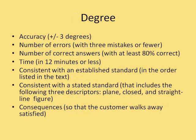The final part of an objective is the degree or criteria. This statement describes how well the learner must do for you to say the learner has achieved the objective. Degree can be stated using the following methods: accuracy, number of errors, number of correct answers, time, consistent with an established standard, consistent with a stated standard, and consequences.